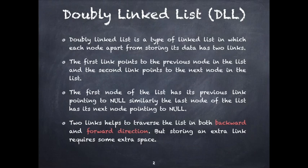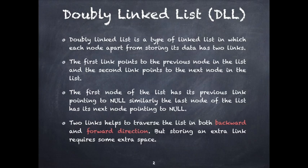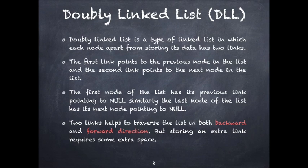What is a doubly linked list? First of all, it is a type of linked list in which each node is having two pointers. In singly linked list you had only one pointer, that is 'next'. Here in doubly linked list you will have two pointers or two links for each node. The first link points to the previous node in the list and the second pointer points to the next node in the list. So we call these two pointers 'previous' and 'next'.